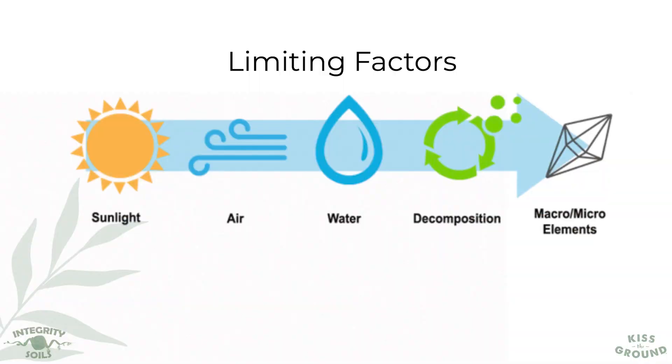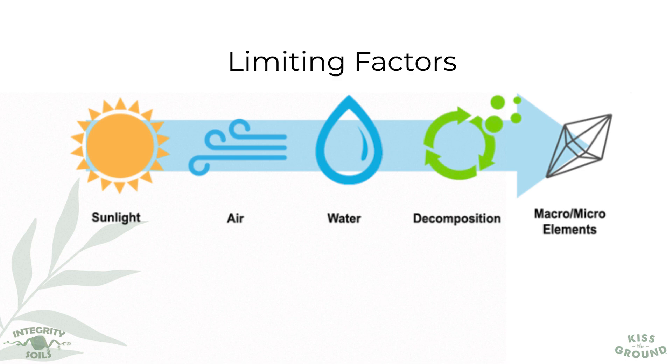Then I look at decomposition — what's happening with any plant material that's on that surface, plant roots? Are they breaking down really quickly? Is this gut system functioning? That's way before I start looking at all the macro and micro elements. And what you find is most of the salespeople that you deal with are dealing with number five in terms of what makes a plant healthy and thrive.